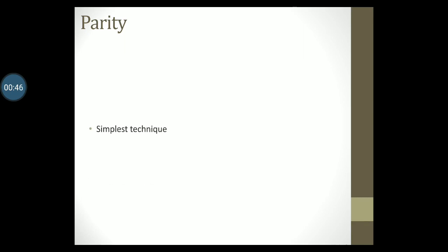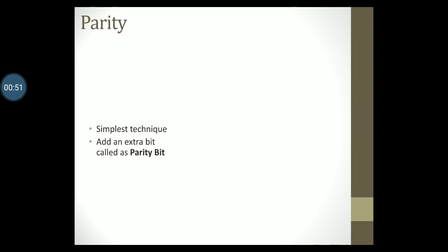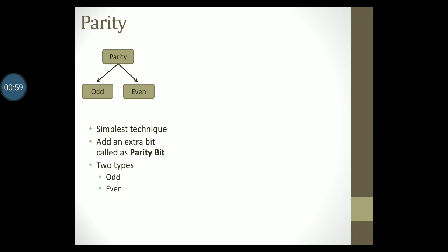Parity is the simplest technique for error detection. All you need to do is add an extra bit to the data that you wish to transmit and call it as a parity bit. There are two types of parity: odd parity and even parity.